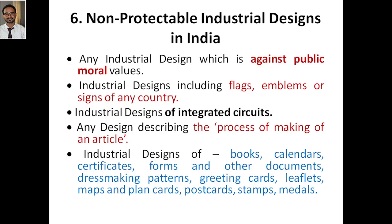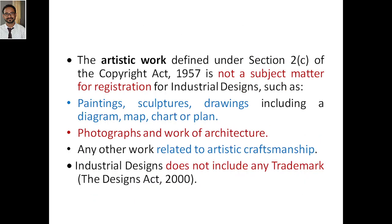Now, artistic work as defined under Section 2(c) of the Copyright Act 1957 is not subject matter for registration for industrial designs. Such works would come under the Design Protection Act 2000. Examples of artistic works include paintings, sculptures, drawings including diagrams, maps, charts, or plans. These things may not get you industrial design protection, but they will get you copyright registration.